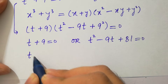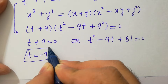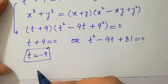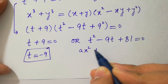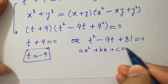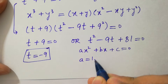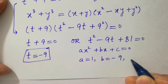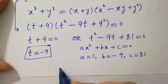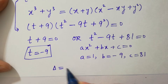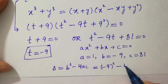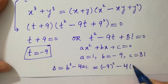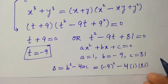From t + 9 = 0, we get t = −9. This is our first real solution. For the quadratic t² − 9t + 81 = 0, by comparing we have a = 1, b = −9, c = 81. Take the discriminant: D = b² − 4ac = (−9)² − 4(1)(81).